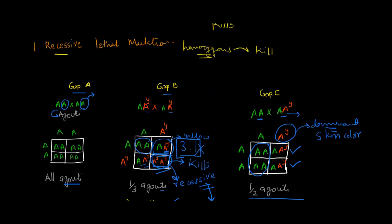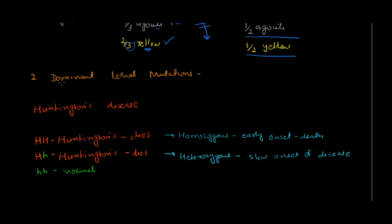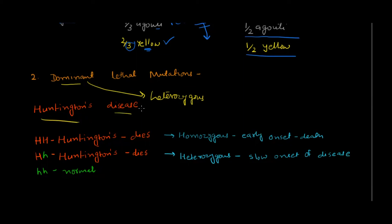The second type is dominant lethal mutation. As the name suggests, it is lethal even in heterozygous condition — even one mutated allele is going to cause the disease. An example in humans is Huntington's disease, a neurological disorder.